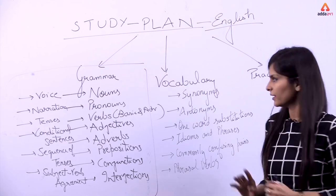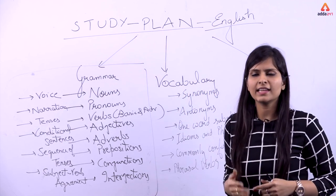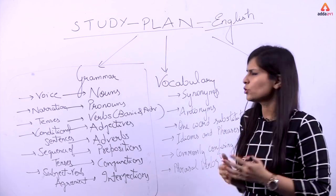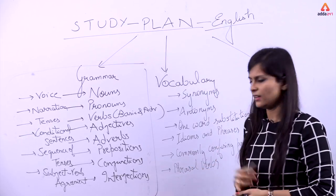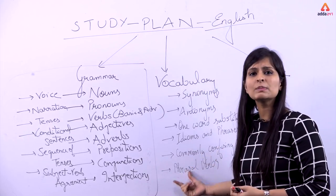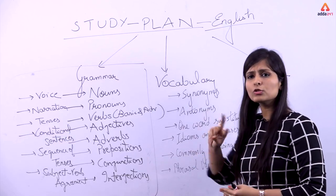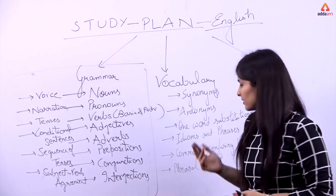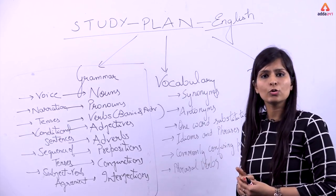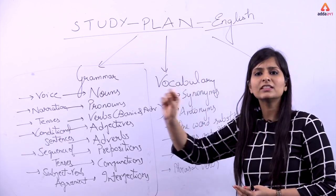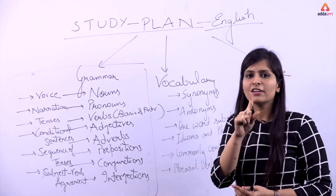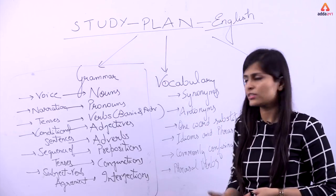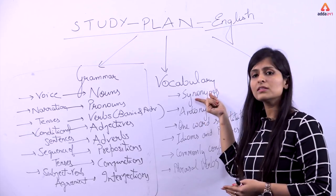One important thing is that we have to learn vocabulary using many different methods. One method is the root word method; another method is mnemonics. Phrasal verbs are verbs plus prepositions. Commonly confusing words are two words that look similar but have different meanings — for example, 'lie' and 'lay'. One-word substitution means a long phrase replaced by a single word — for example, 'one who talks a lot' is 'loquacious'. Antonyms are opposites; synonyms are words with the same meaning.